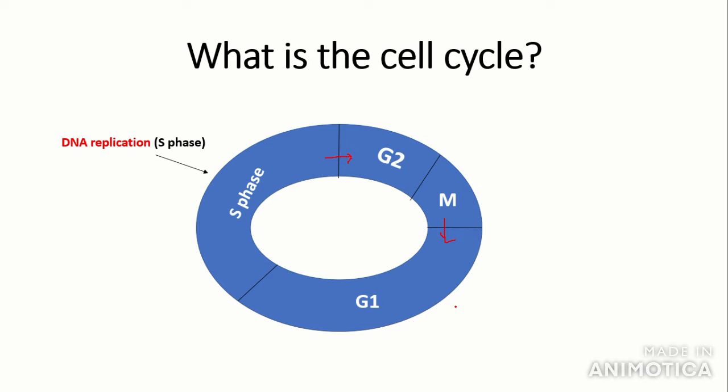So DNA replication takes place in S phase and M represents mitosis. Now G1 and G2 are called Gap 1 and Gap 2. The function of these stages of the cell cycle will become clearer as we go on. Now note that S phase, G2, and G1 are all part of interphase, which is the stage that cells spend most of their cycle in.